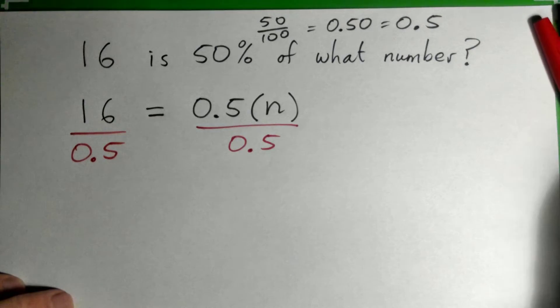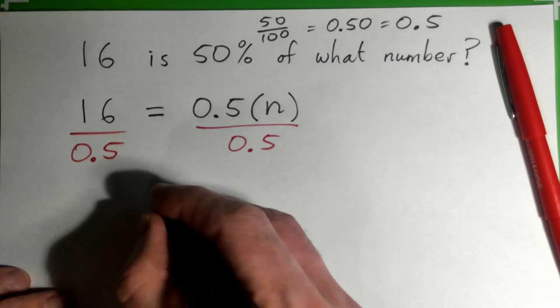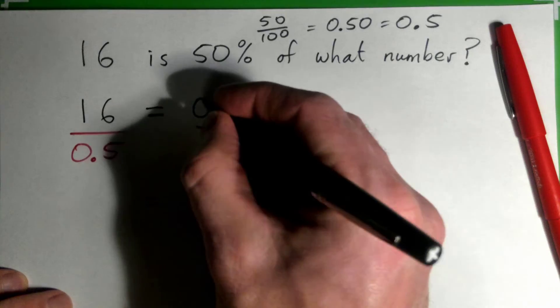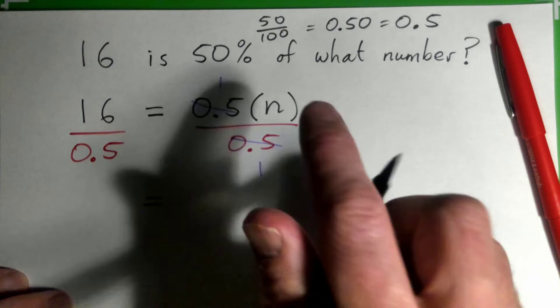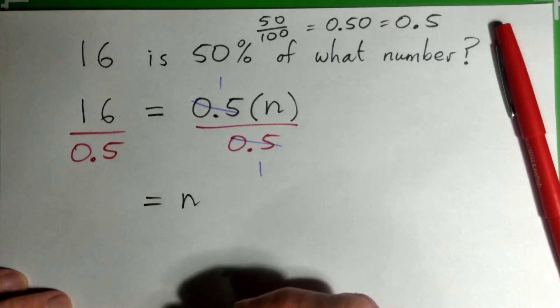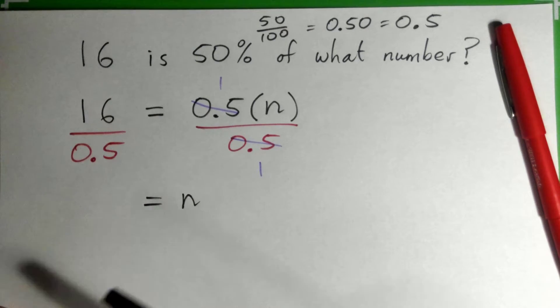So now you've got 16 over 0.5 equals n, and these 0.5s actually cross cancel, you see, and they give 1. So that's 1 times n over 1, that's just n. Now you've got to figure out 16 over 0.5.